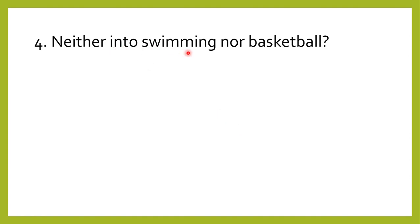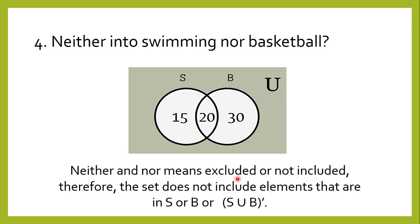Lastly, neither into swimming nor basketball. When we say 'neither,' it means excluded or not included — it's the opposite of the third question, the complement of the union of S and B. The universal set is 100 students, and the total of sets S and B is 65. So we subtract: 100 minus 65 equals 35 students who are neither into swimming nor basketball.